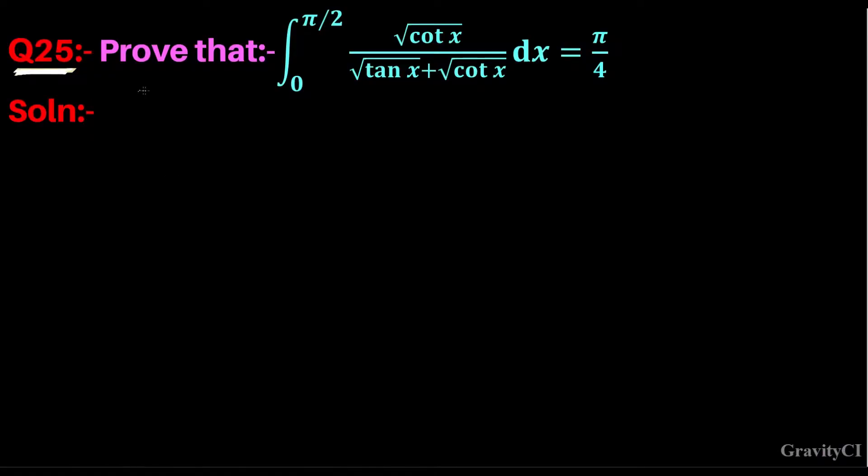Question number 25: Prove that integral from 0 to pi/2 of root cot x upon root tan x plus root cot x dx equals pi by 4. So first of all, let I equal to the integral from 0 to pi/2 of root cot x by root tan x plus root cot x.